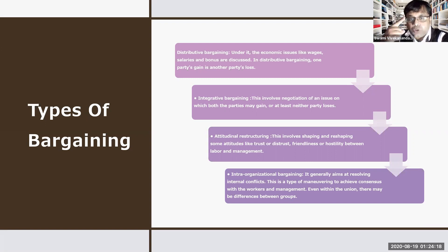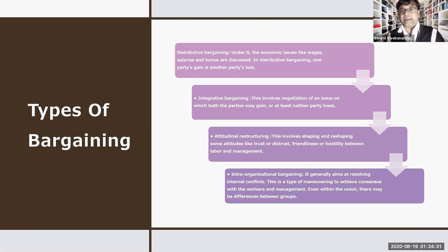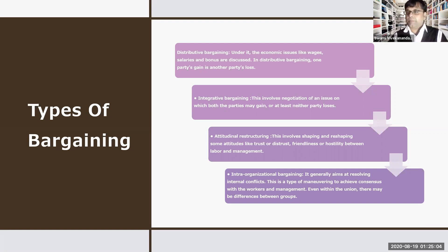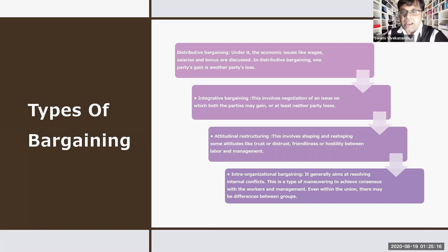The second type is integrative bargaining, which involves negotiation of issues where both parties may gain, or at least neither party loses. For example, employees want a salary raise; management agrees but asks for increased production. If production increases, sales and profits rise, covering the extra salary cost. Both the employees and the company benefit — that is integrative bargaining.